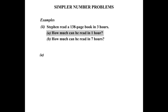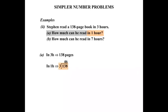Let's do Part A first. How much can he read in one hour? We're given that he can read 138 pages in three hours. We need to work out what happens in one hour, so we divide 138 by three — because the 138 is what happens in three hours. So 3 into 138 works out to be 46. Stephen can read 46 pages in one hour.